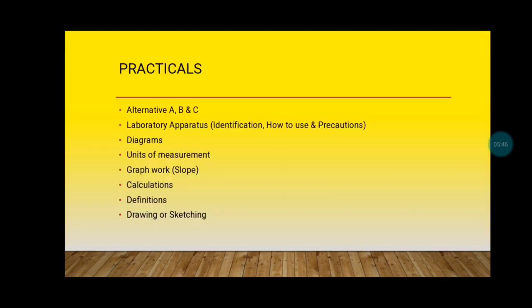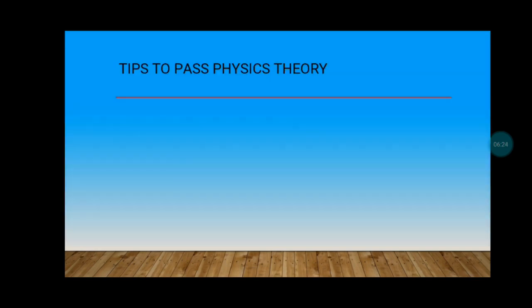In the practicals, you have alternatives A, B, and C. You have laboratory apparatus you must be able to identify when it comes to the practical aspect. You can be asked to draw in the practicals, and you should know your units of measurement very well, because if the unit is not correct, you won't be given the full mark. After sketching the graph, you are asked to find the slope, and sometimes you can be asked to interpret what the slope means. You can also be asked to draw diagrams and state definitions in the practical aspect.